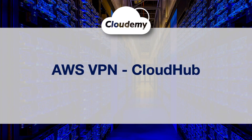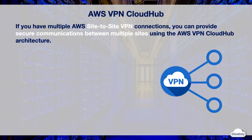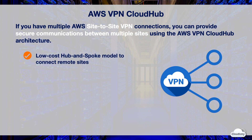Hey guys, welcome back. I'm Jay. In this episode we're going to look at AWS VPN CloudHub. If you have multiple AWS site-to-site VPN connections, you can provide secure communications between multiple sites using the AWS VPN CloudHub architecture. CloudHub architecture enables your remote sites to communicate with each other.